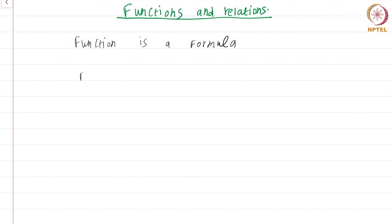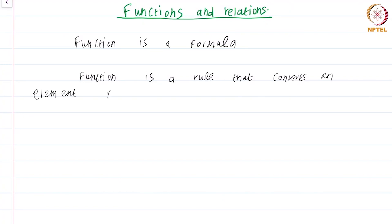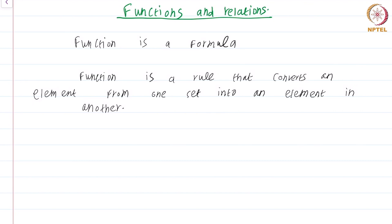The best way to think of a function is that it is a rule that converts an element from one set into an element in another. One dynamic way to think of it is as a function that has an input and transforms the input into the output. The question is how do you make this mathematically precise using set theory specifically?